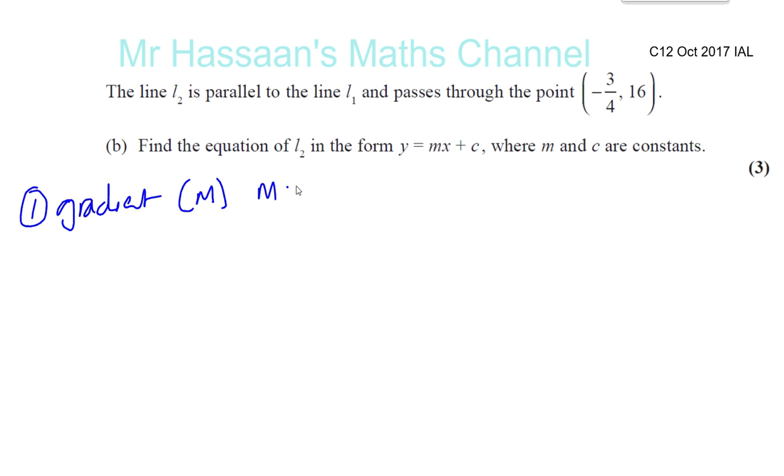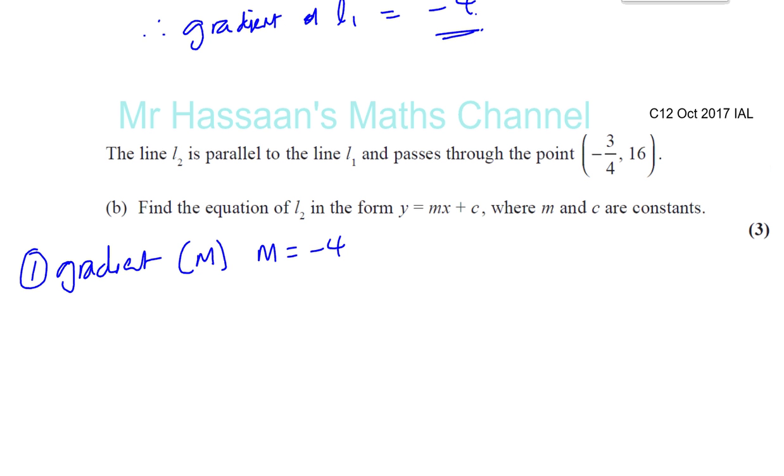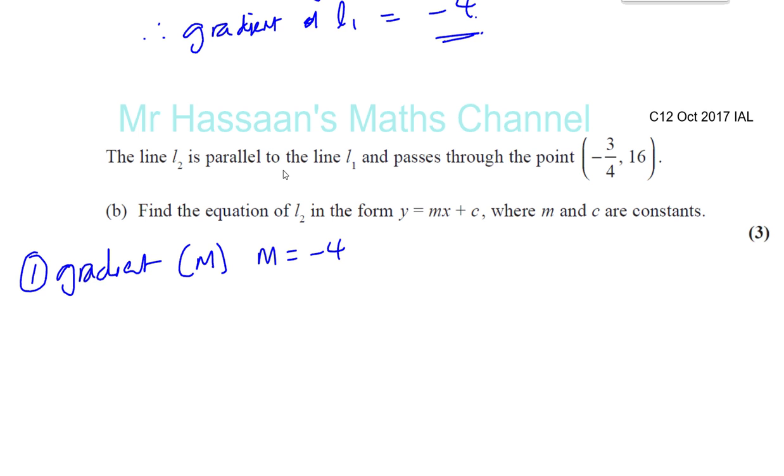Okay, we need the gradient of the line, which is m. So you can say here, m is equal to negative 4. We found that in part A. Because it's parallel to the line. When two lines are parallel, they have the same gradient. Okay, so if line 2 is parallel to line 1, the gradient of line 2 is also negative 4. And the second thing we need is any point on the line. So we've got minus 3 quarters and we've got 16.